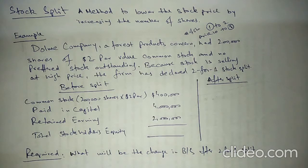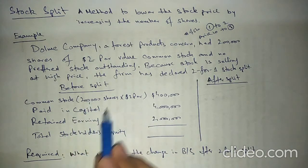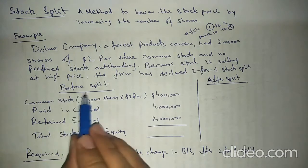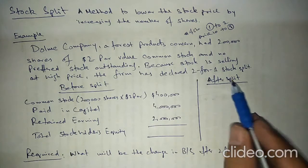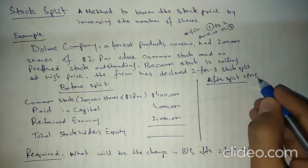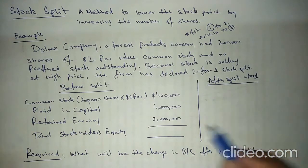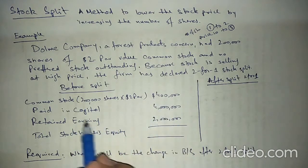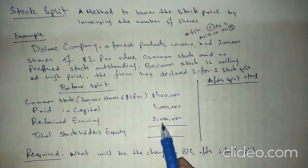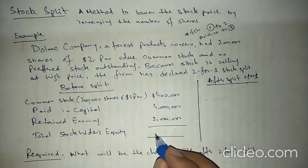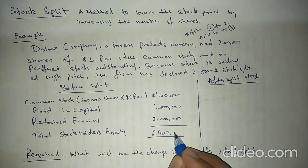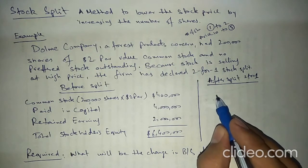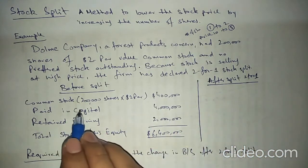A two-for-one stock split means we are splitting one share into two shares. Here we have the balance sheet before the stock split. Common stock is four lakh, paid-in capital is 40 lakh, retained earnings is 20 lakh, and the total stockholders' equity — the sum of these three — is 64 lakh.